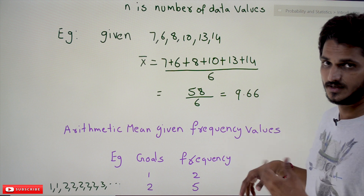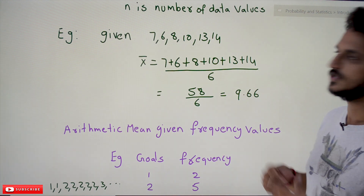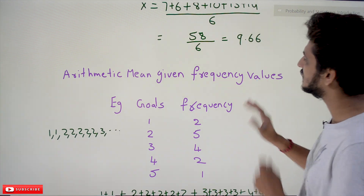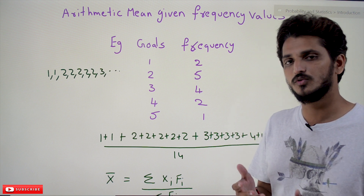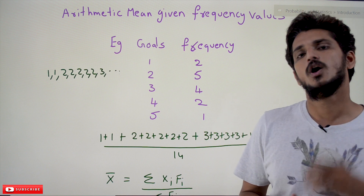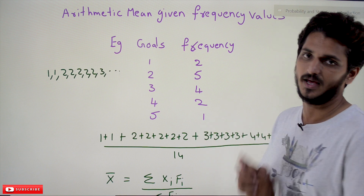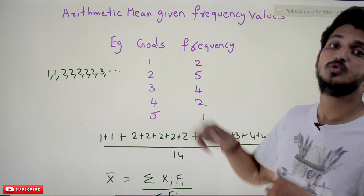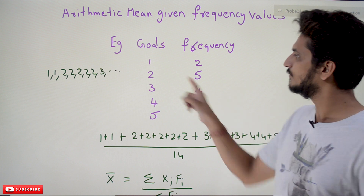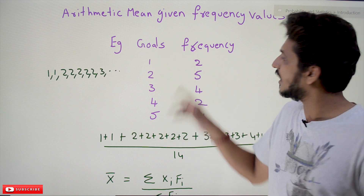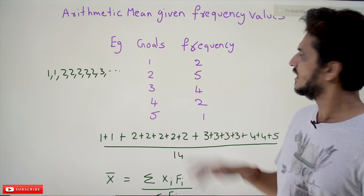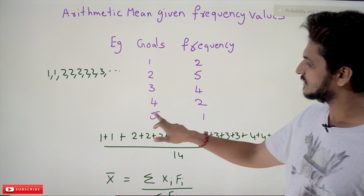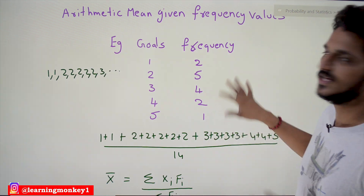Now, data can also be provided using frequency values. For example, in a football game, some players score one goal, some two goals, some three goals, etc. When presented as frequency data: 2 players scored 1 goal, 5 players scored 2 goals, 4 players scored 3 goals, 2 players scored 4 goals, and 1 player scored 5 goals.